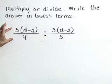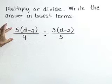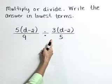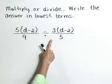We have the rational expression 5 times the quantity d minus 2 over 9 divided by the rational expression 3 times the quantity d minus 2 over 5.